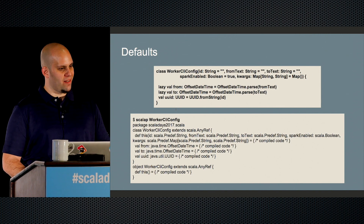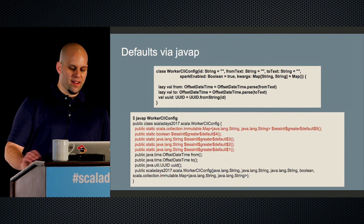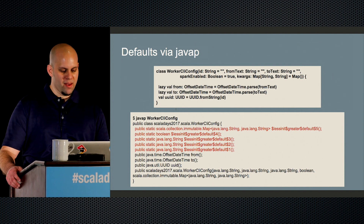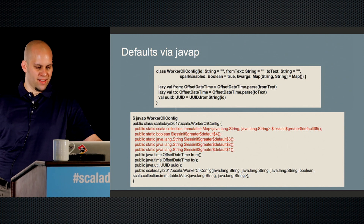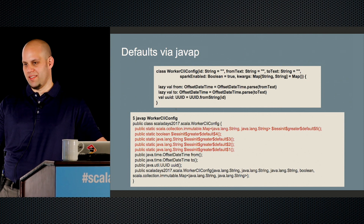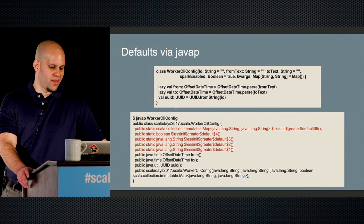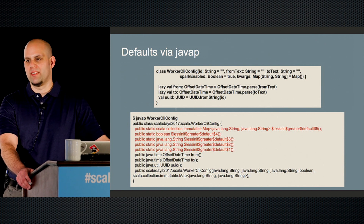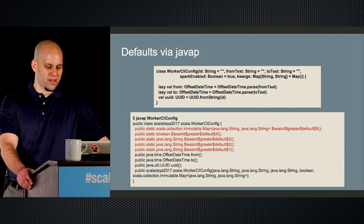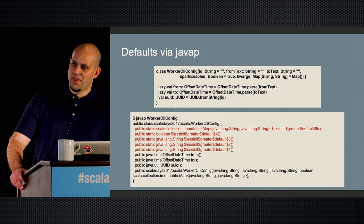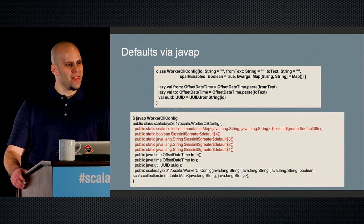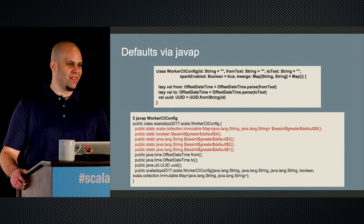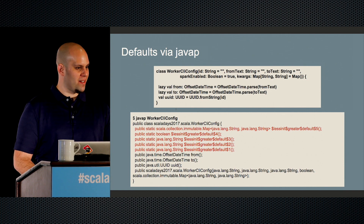If I use the Java profiler on this, I have a from, a to, and a UUID method for my input parameters. But in red, I have public static methods — defaults 1, 2, 3, 4, 5 — and the types match accordingly to the Scala types for what's coming into the constructor. That's interesting — that's how the compiler handles default arguments: it sets them as public static. Notice it's not final, so technically it's overwritable. We'll come back to this to talk about the lazy aspect — how does lazy work?